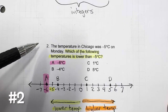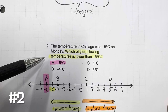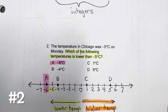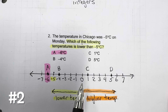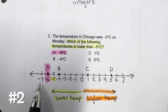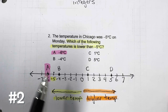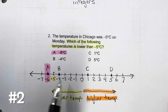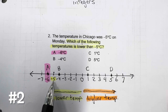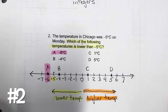Problem 2: The temperature in Chicago was negative 5 degrees Celsius on Monday. Which of the following temperatures is lower than negative 5 degrees Celsius? Here's a number line. To the left are negative values. Remember, the greater the negative number, the smaller the value. As we go to the left, the lower the temperature; as we go to the right, the higher the temperature. We're looking for a temperature lower than negative 5, so you'd go to the left, which is negative 6 degrees Celsius.